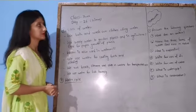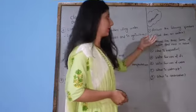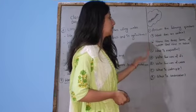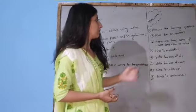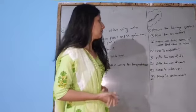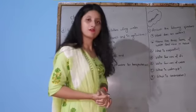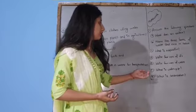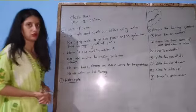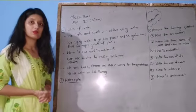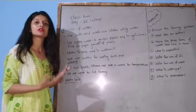Answer the following questions: A) What does air contain? B) Name the three forms of water that exist in nature. C) What is evaporation? D) Write four uses of air. E) Write four uses of water. F) What is the water cycle? G) What is condensation? This is your homework — please do your homework on time. If you have any kind of confusion, please do ask.